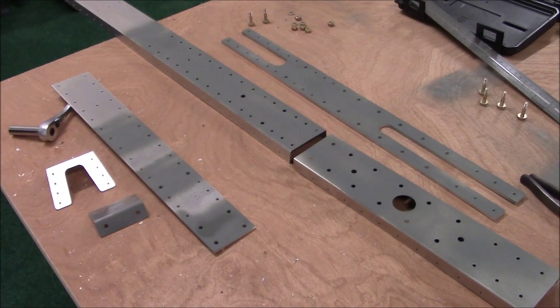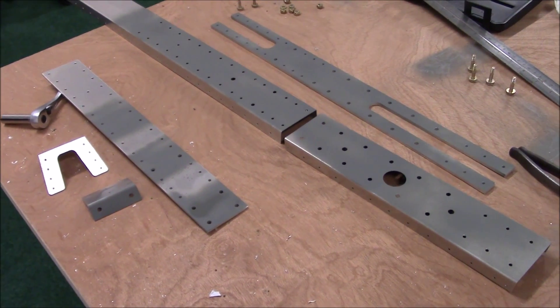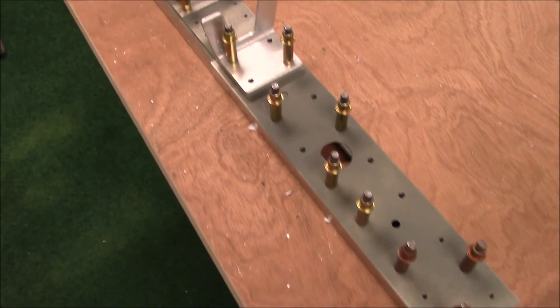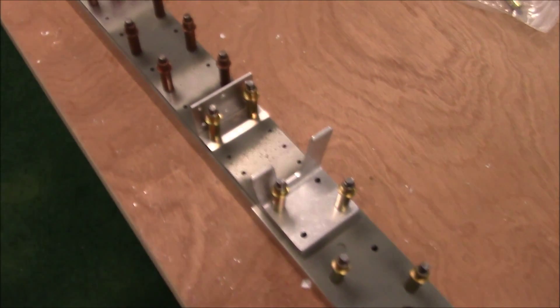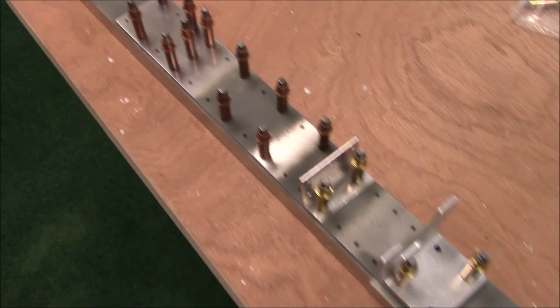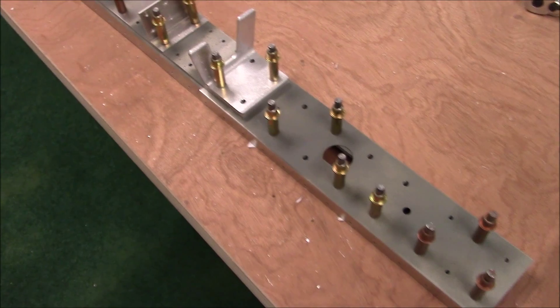I got all of the pieces primed and deburred. I'm going to go ahead and assemble them and pull some rivets. There it is painted up and put back together using the 3/16ths inch Clicos as well. I'm going to go ahead and start pulling rivets.